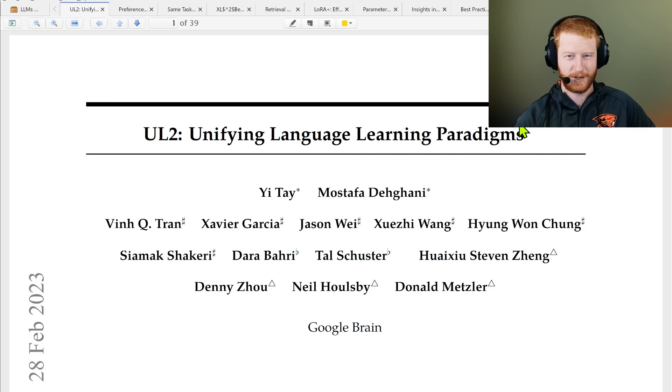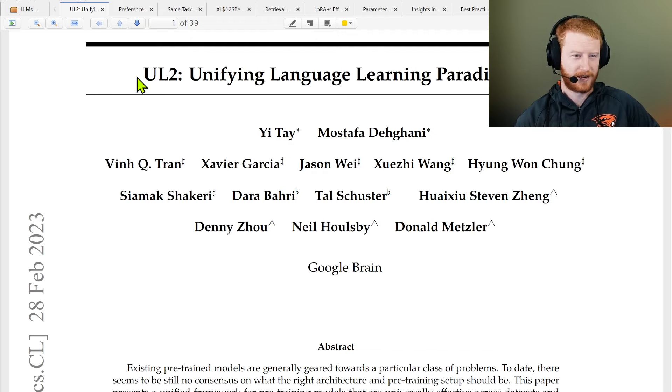I'm just going to go through left to right. This one I definitely remember - it's a classic, UL2, unifying language learning paradigms. This is particularly salient at the moment. Yi Tay, after writing this paper, left Google along with some others and started Reka. They've released their own series of models, and particularly interesting, at least some of them are encoder-decoder models and also mention maybe using this UL2 objective.